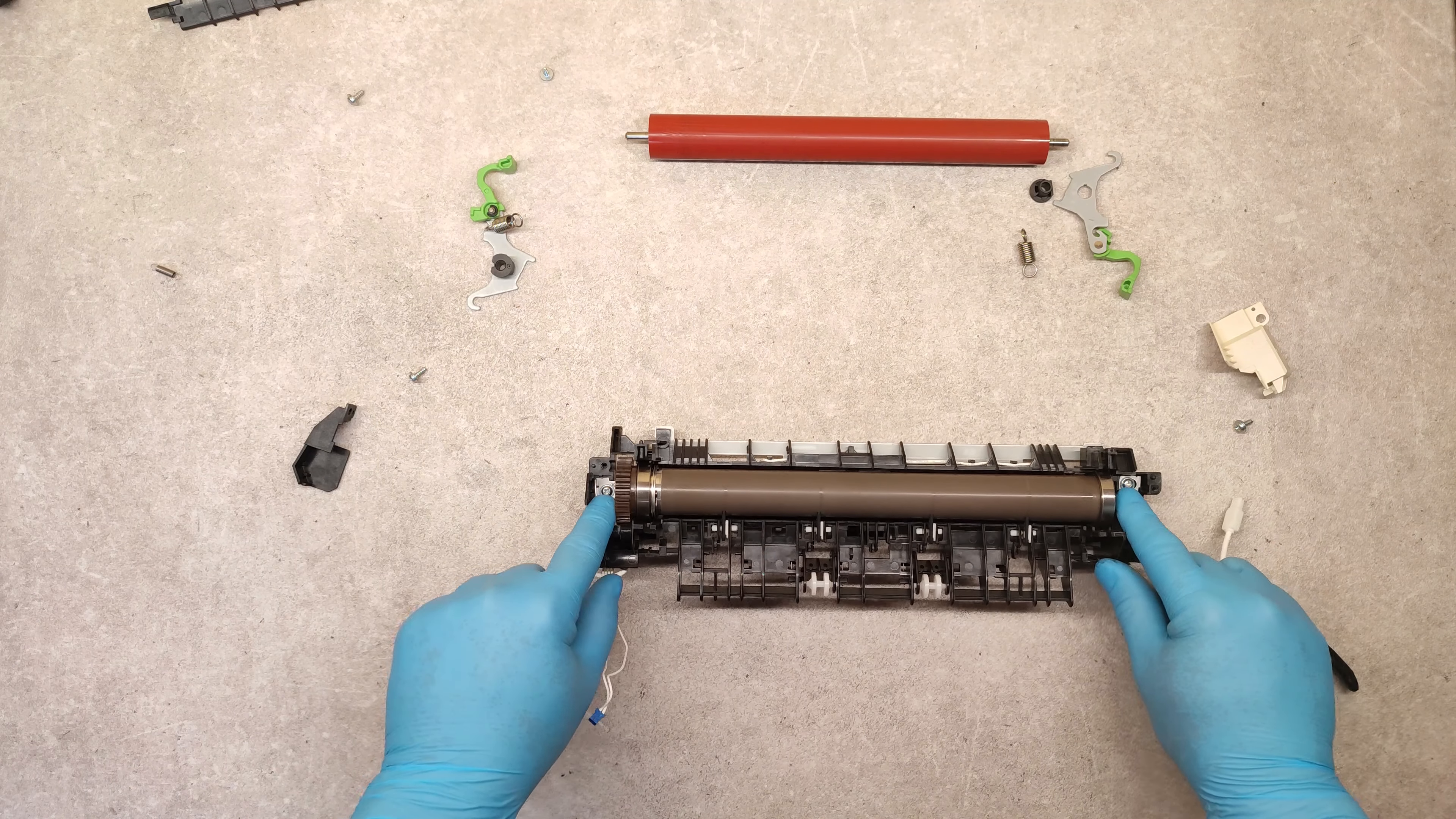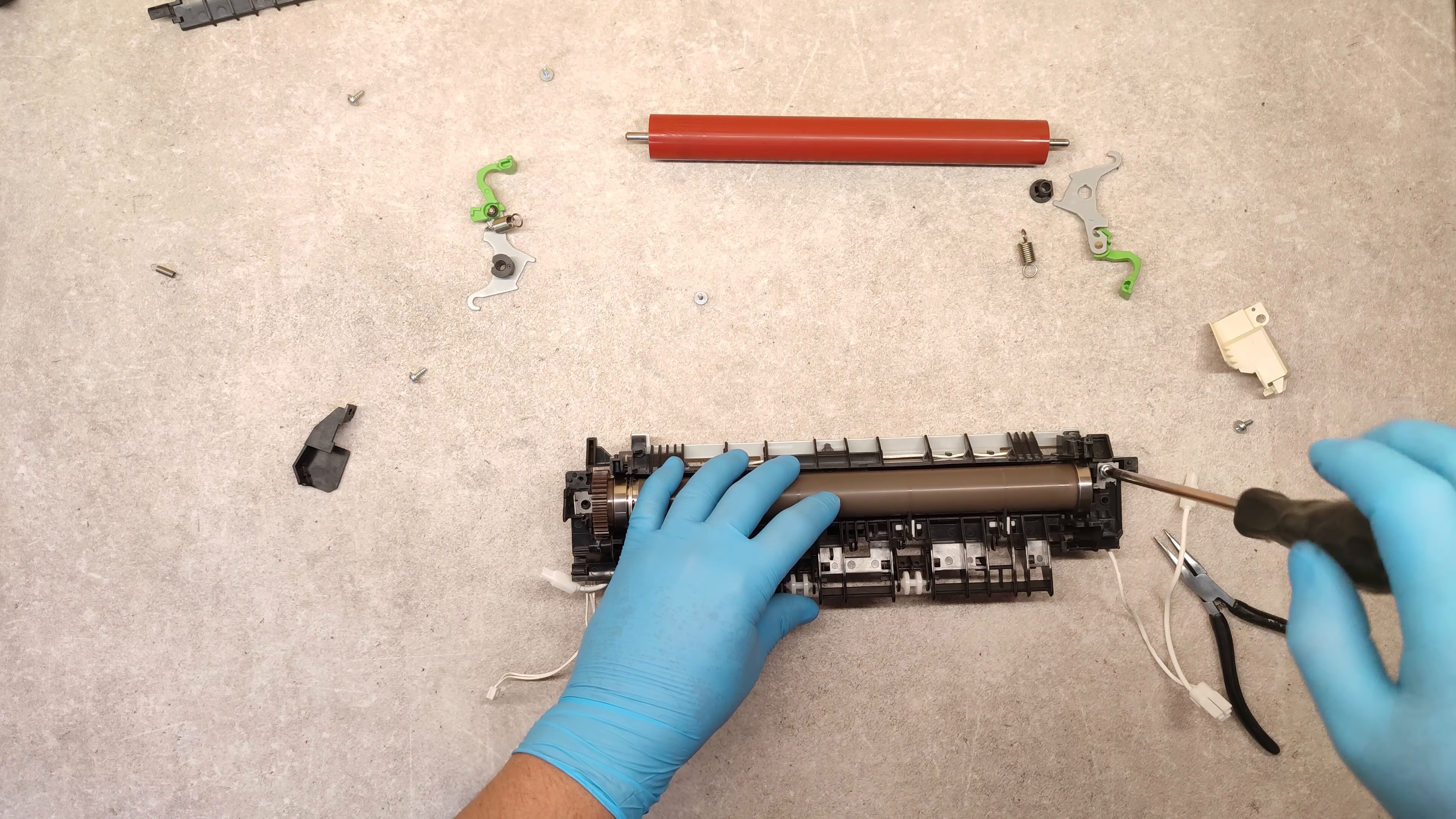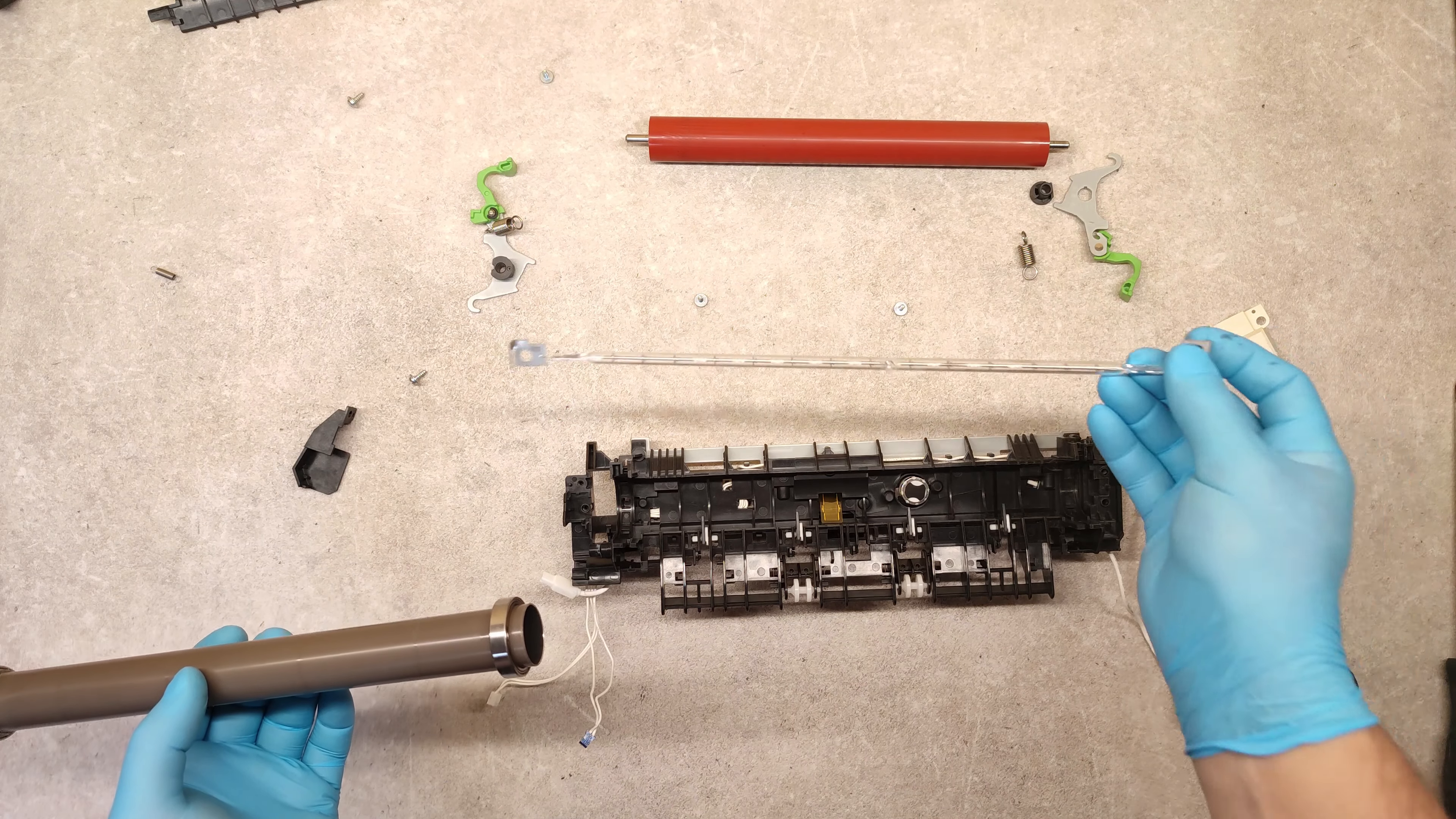Now unscrew these two screws which hold the fusing clamp and take it out. Carefully remove the fusing clamp. You can clean it with alcohol if it's dirty.